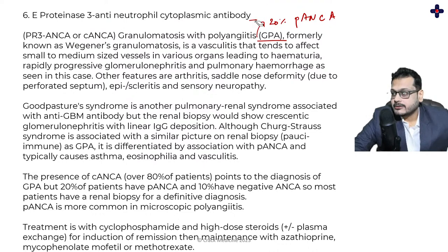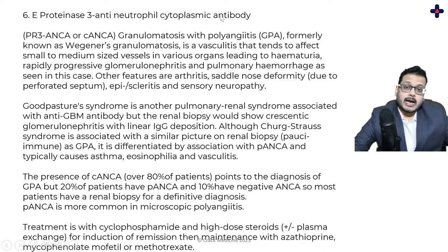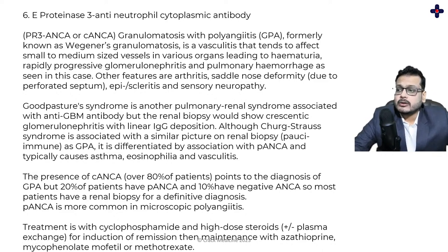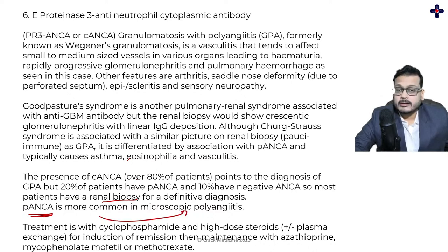The definitive diagnosis of GPA is made with renal biopsy. Be aware that C-ANCA can sometimes be negative and P-ANCA positive, though this is rare in Part 1 examinations. P-ANCA points more towards microscopic polyangiitis.